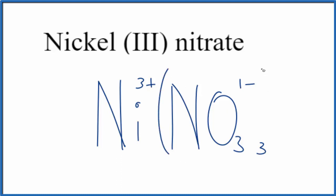We should put parentheses around the nitrate here, because we have three of them. So now we have three times one minus, that's three minus. That balances out the three plus, net charge of zero.